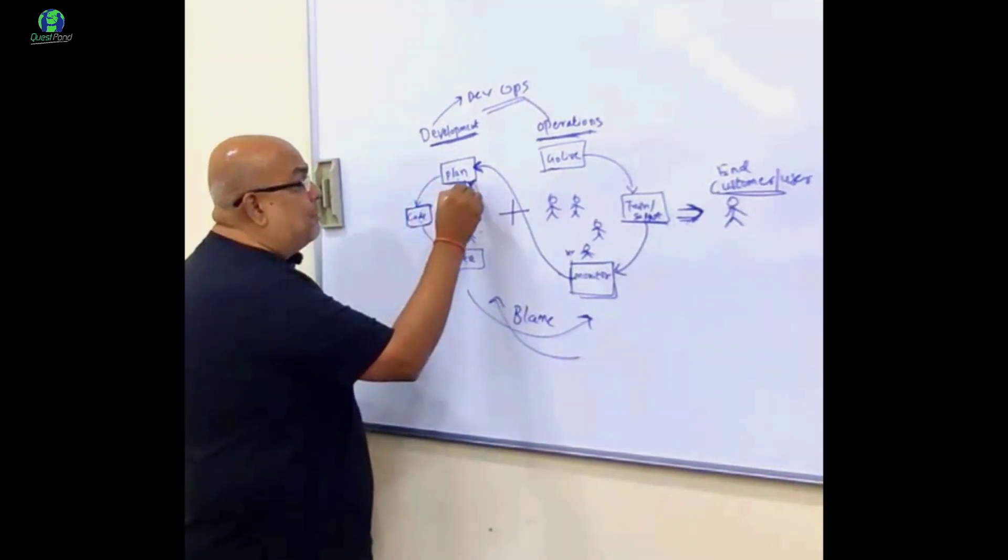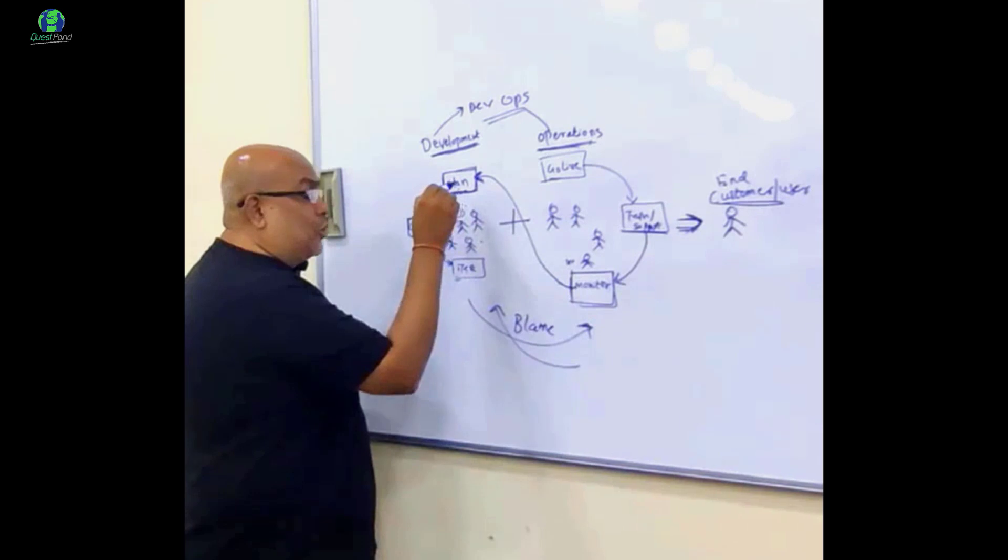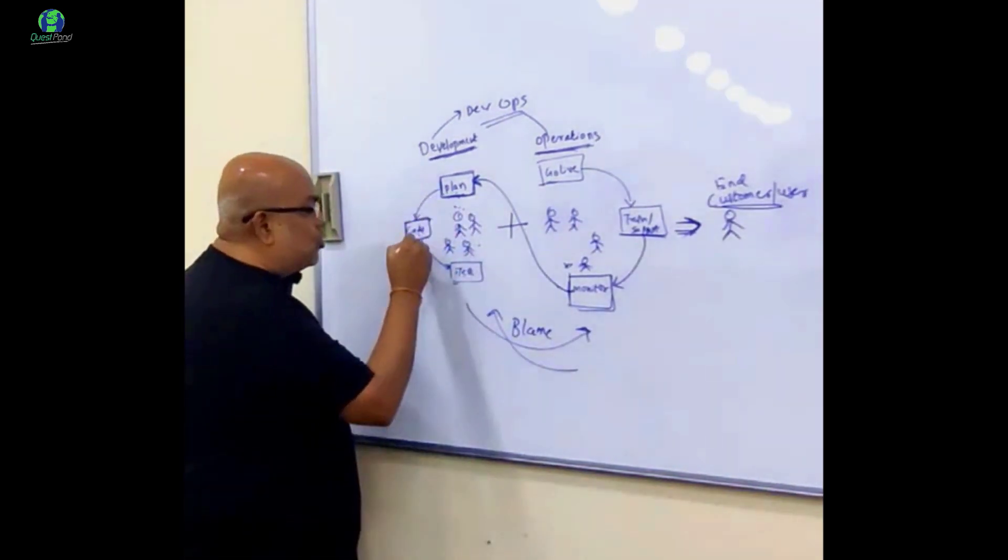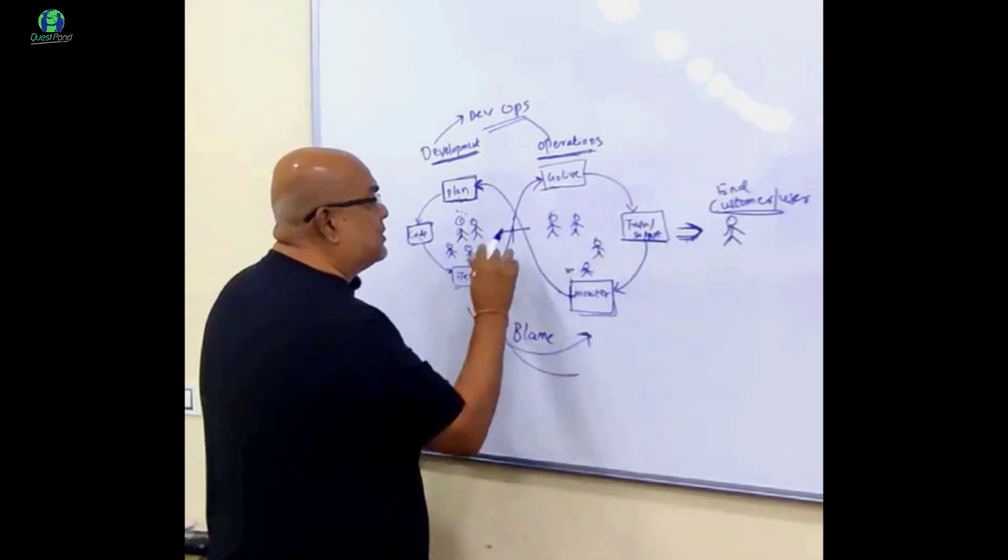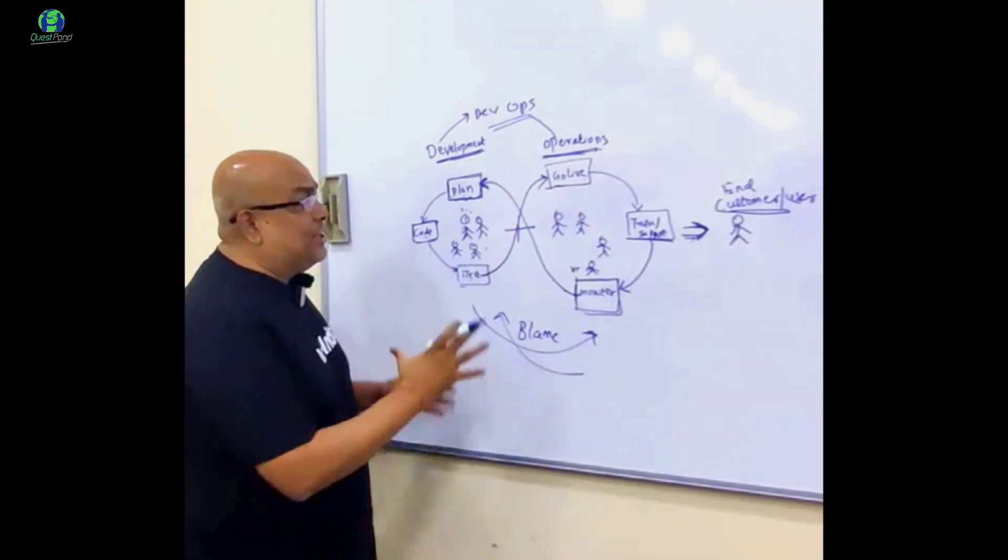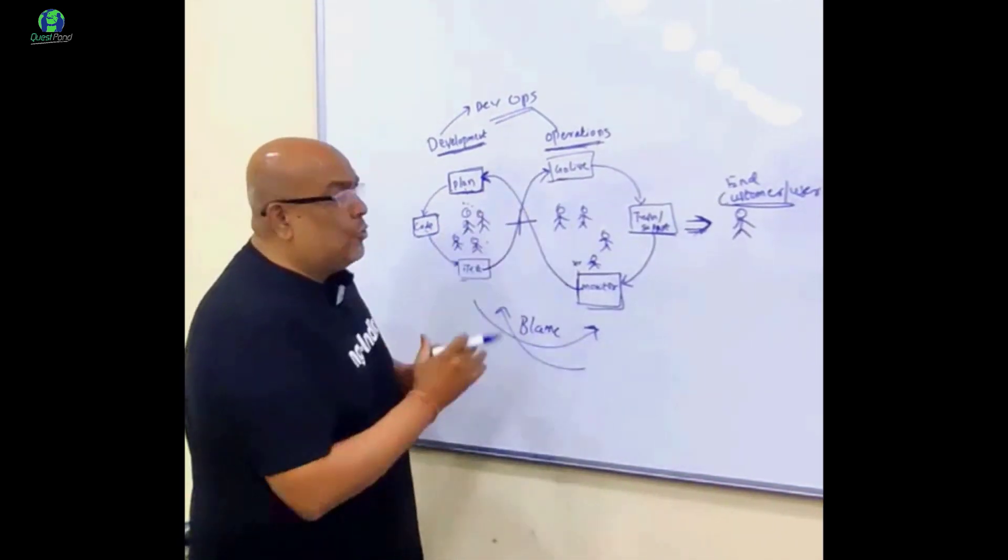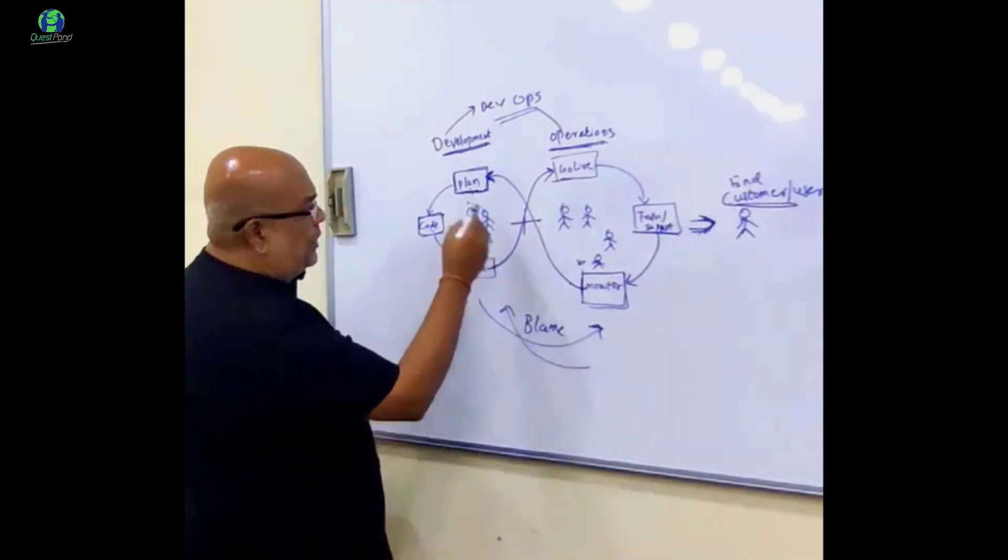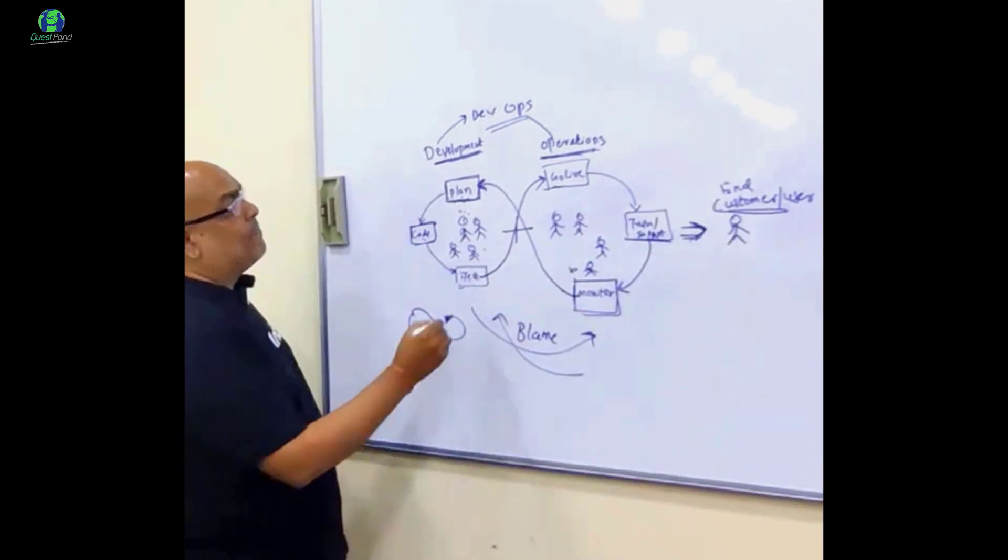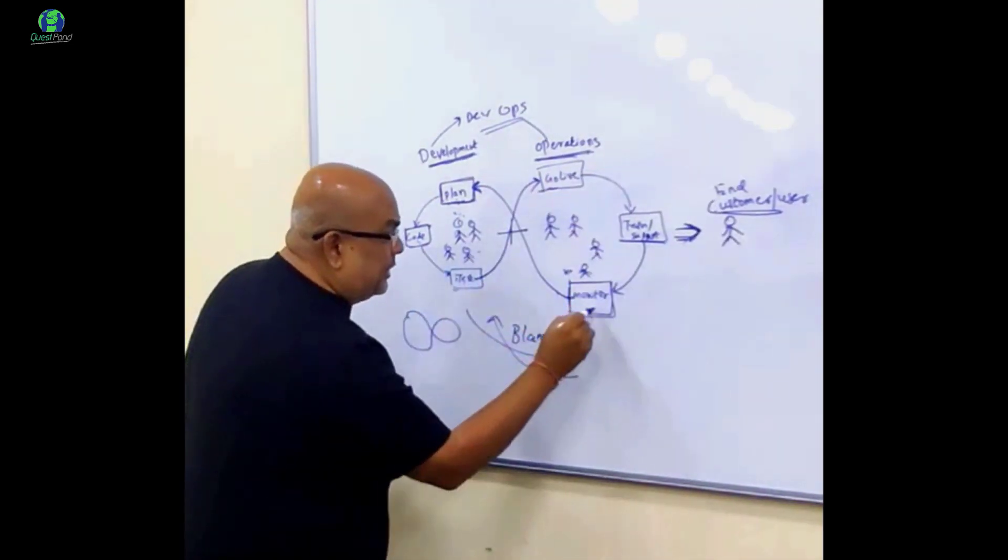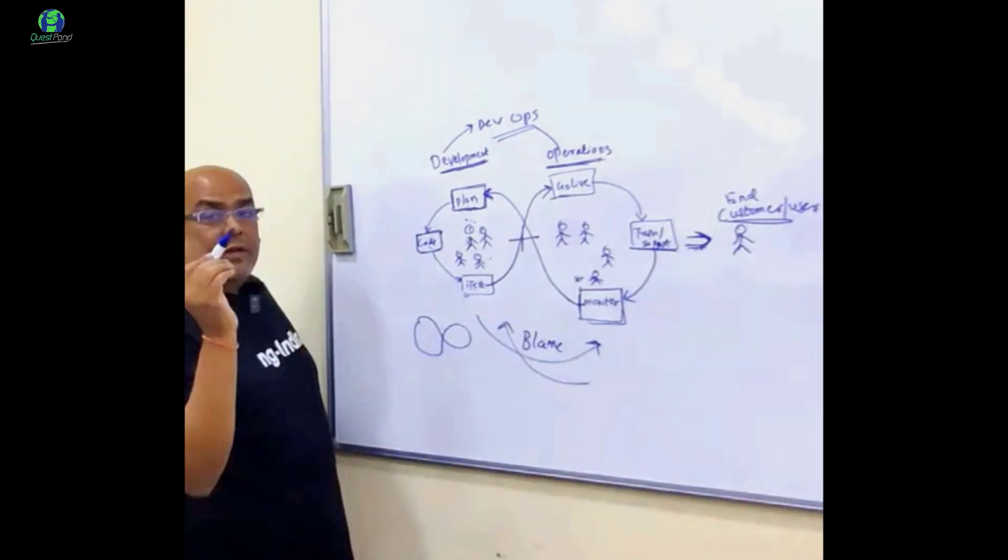And the development team also acknowledges this, puts it in the planning phase, codes it, tests it, and when they are going live, they help. The developers actually help the operation team saying that this is how you do the build, this is how it should go live. So you can see over here this nice diagram, which is very famous, this 8 diagram, which says that the development and operation team should work together.